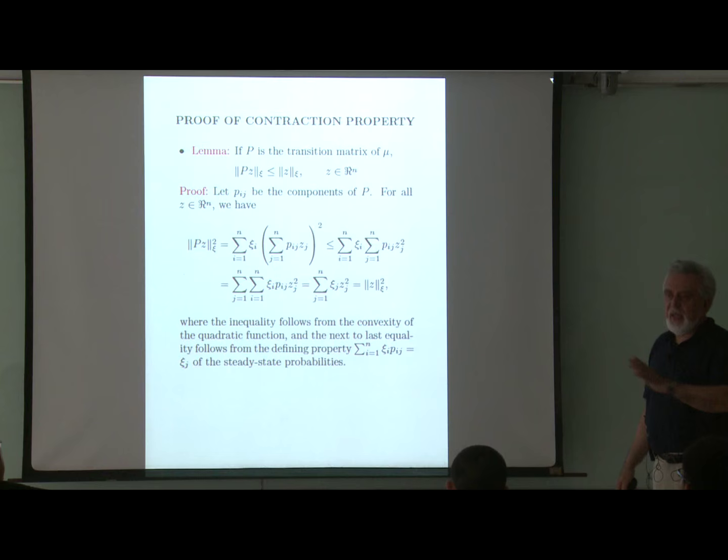There is also a proof of the error bound — again a one-line proof. The first equality uses the Pythagorean theorem. The second inequality uses the fact that j_mu is a fixed point of T, and phi r*, the approximation, is a fixed point of pi T. Finally, since pi T is a contraction of modulus alpha, you get the result. What this says is that if you project j_mu according to the xi distribution of the corresponding Markov chain, the error you get is bounded by the minimum possible error over the approximation subspace.